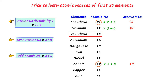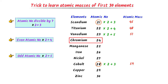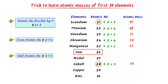The atomic number of vanadium is 23. According to the third trick, I multiply 23 by 2 and add 5 to it. I get 51. The atomic number of chromium is 24. I multiply it by 2 and add 4 to it. I get 52. The atomic number of manganese is 25. I multiply it by 2 and add 5 to it. I get 55. The atomic number of iron is 26. I multiply it by 2 and add 4 to it. I get 56.